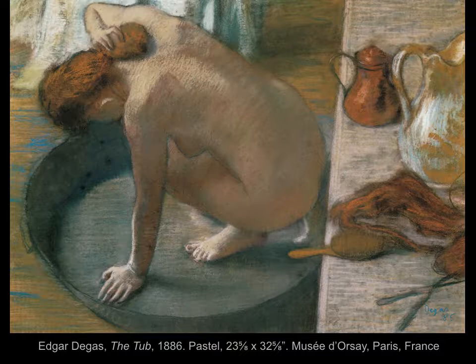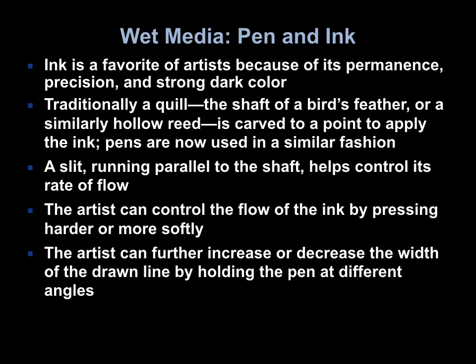Nearly 400 years later, Degas used pastel to also practice portraying the more challenging angles, shapes, and movements of the human body. Degas was interested in capturing the surprising qualities of our ordinary movements, using his artwork to bring attention to the unique angles and shapes we create without thinking. Pastel was a useful choice for capturing brief and fleeting moments such as what we see here, since it allowed him to portray the scene quickly.